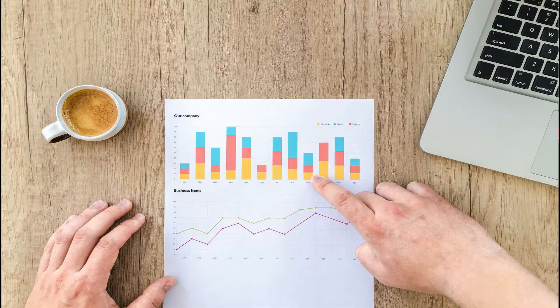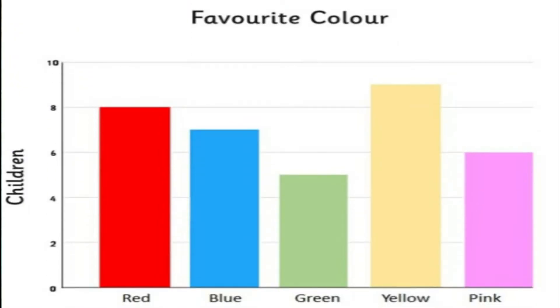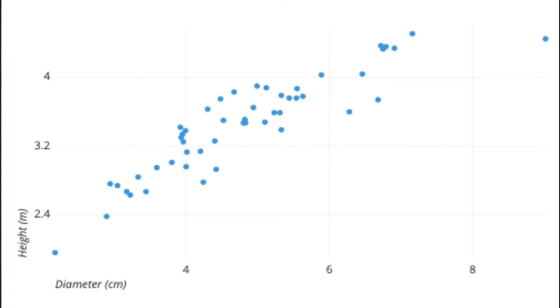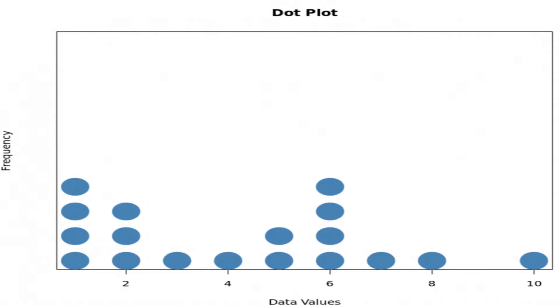For the visual measure, we use graphs, we use charts, we use maps and other details to actually visualize our data and tell a story. For the numerical measure, we make use of numerical analysis and basic mathematics and algebra to actually work on our data sets. When it comes to visual measure, we make use of tools like bar charts, pie charts, histograms, scatter plots, dot plots, box plots and whiskers, among other details.